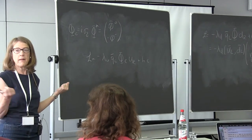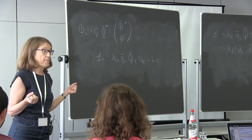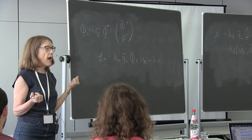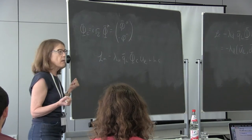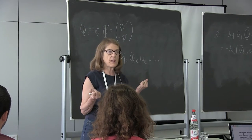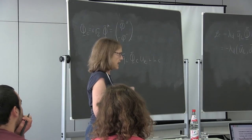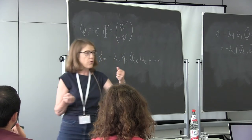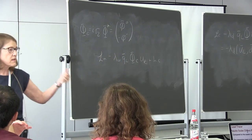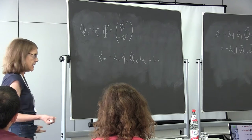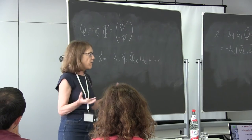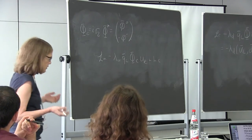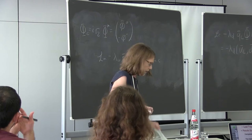With two Higgs doublets: each complex doublet has 4 degrees of freedom, giving 8 total. Three go to the longitudinal components of W⁺, W⁻, and Z. Eight minus three gives five physical Higgs bosons in a supersymmetric or two-Higgs-doublet model.